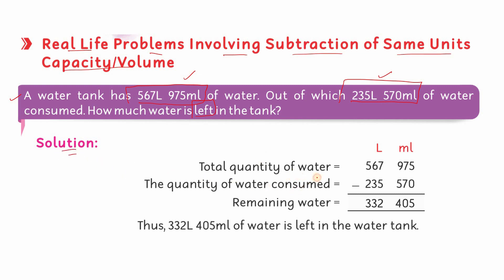Solution: total quantity of water اوپر لکھ لی، جتنا consume ہوا نیچے لکھ لیا۔ Remaining water find کرنے کے لیے subtraction کرنی ہے — milliliters میں سے milliliters اور liters میں سے liters subtract کریں گے۔ 5 میں سے 0 کم کیا 5، 7 میں سے 7 کم کیا 0، 9 میں سے 5 کم کیا 4 — یعنی 405 ml آیا۔